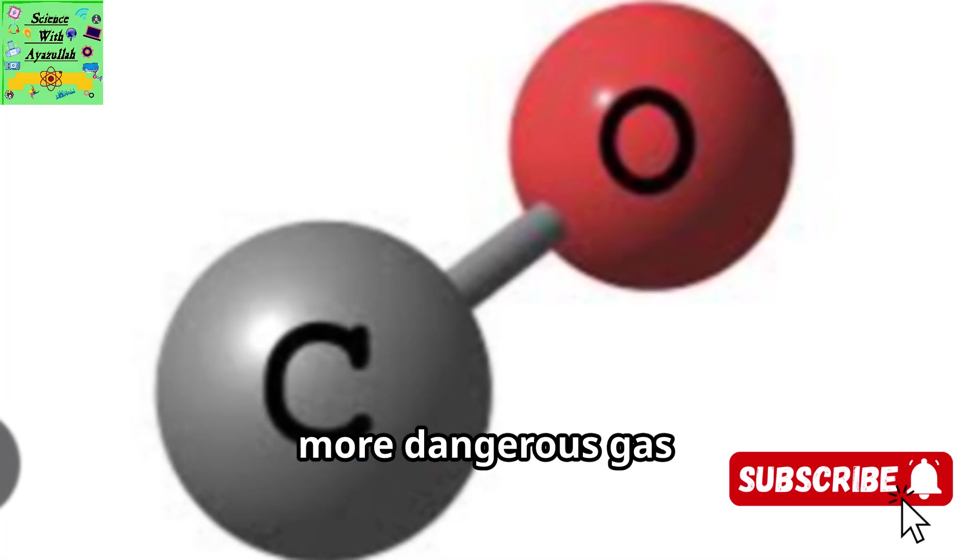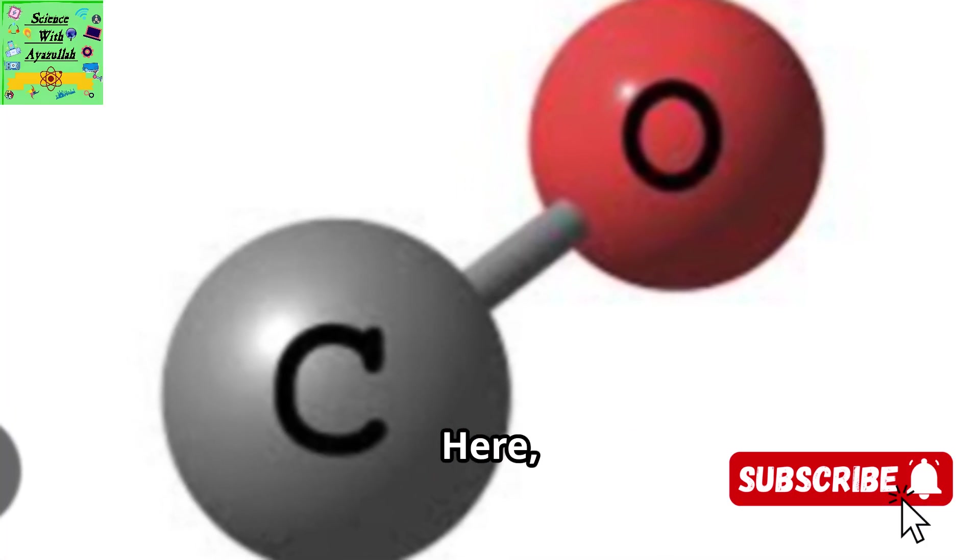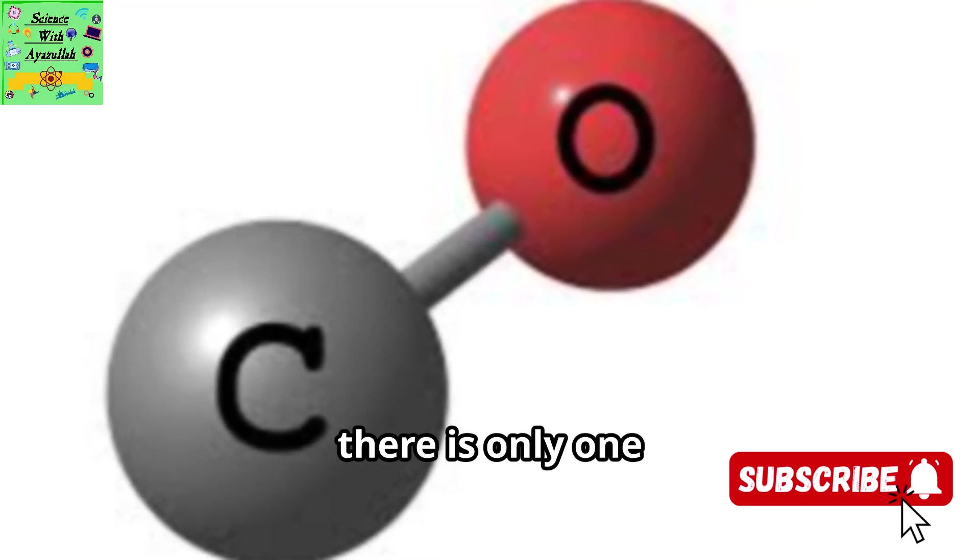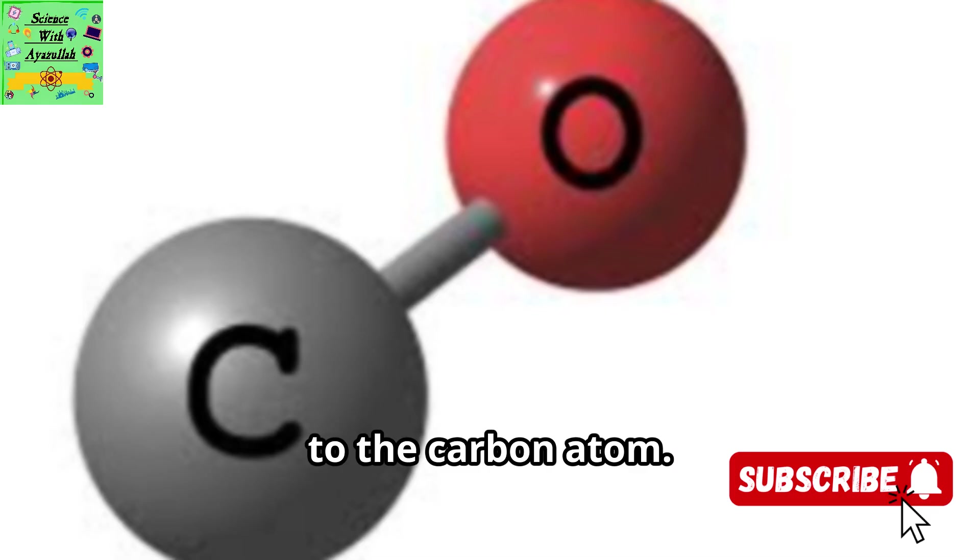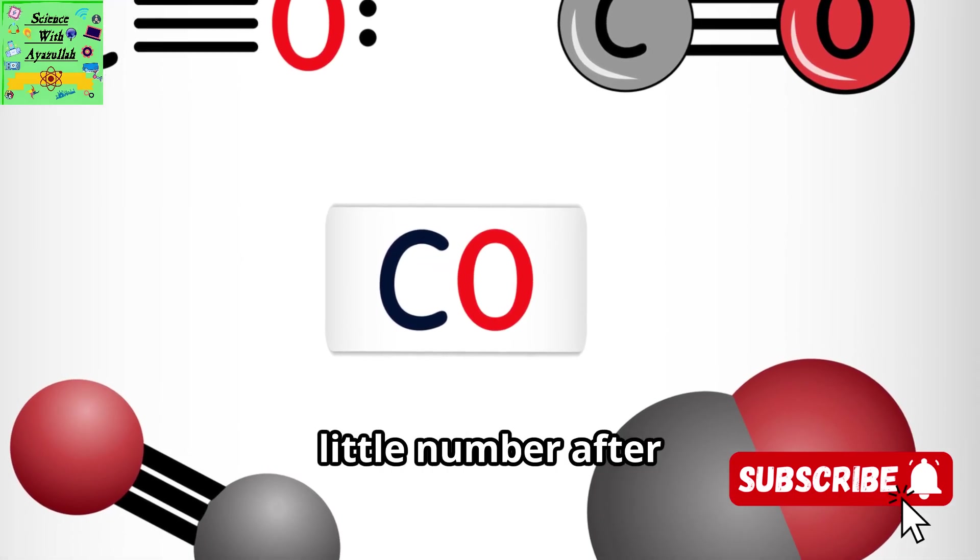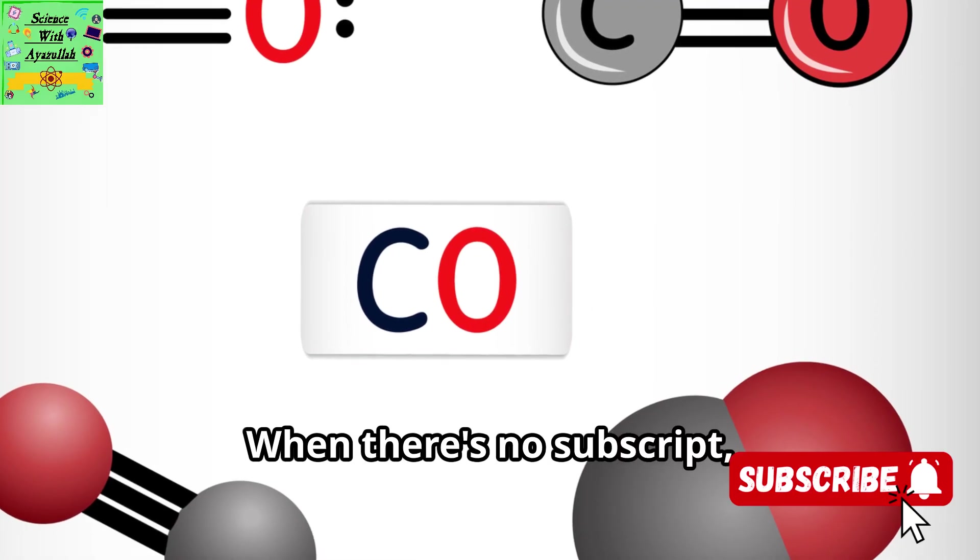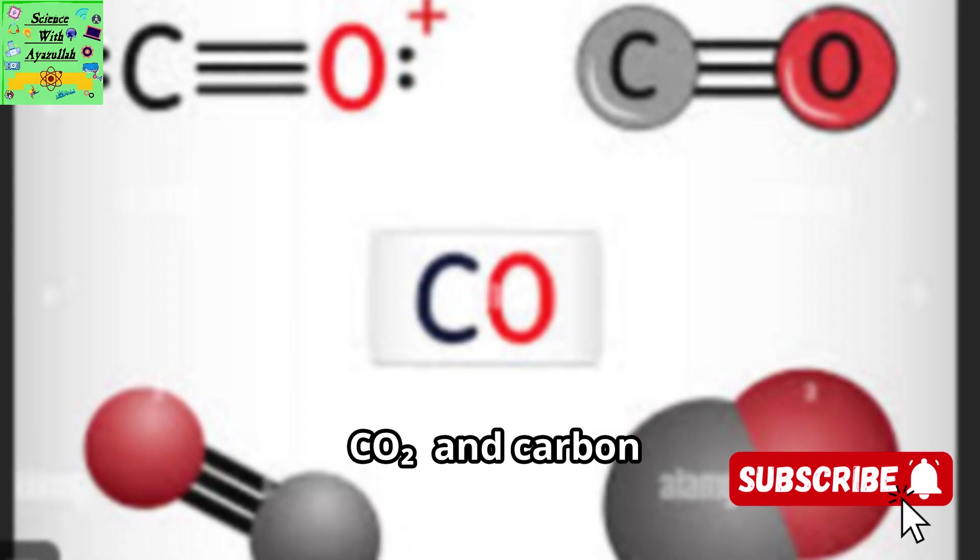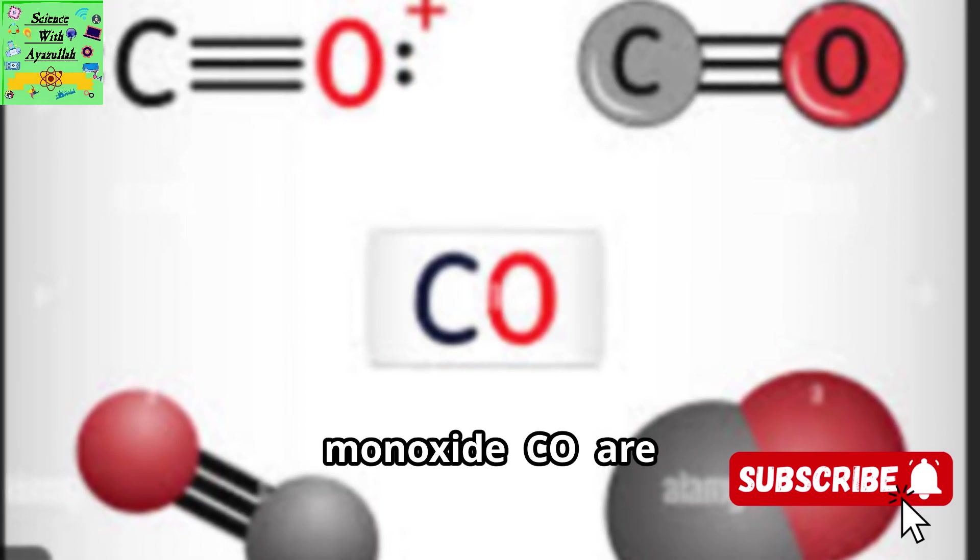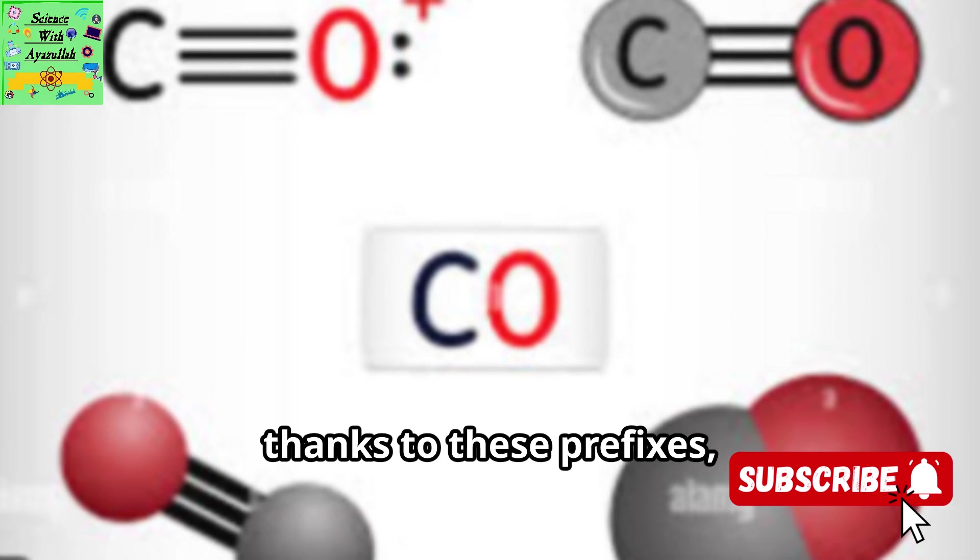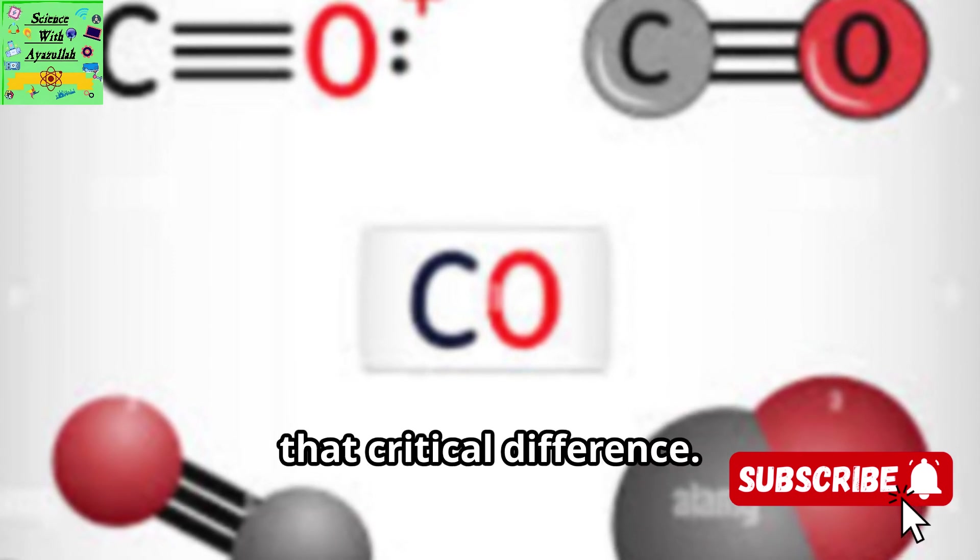Now consider that other, more dangerous gas, carbon monoxide. Here the prefix is mono, which means one. So monoxide tells us there is only one oxygen atom bonded to the carbon atom. Its chemical formula is CO. Notice there's no little number after the O. When there's no subscript it's understood to mean there's just one atom. So, carbon dioxide, CO2, and carbon monoxide, CO, are very different substances with very different properties and their names, thanks to these prefixes, clearly reflect that critical difference.